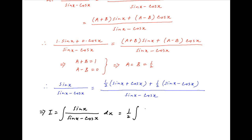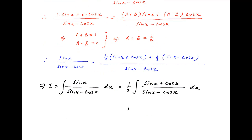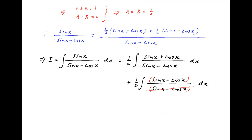Therefore the integral I can be broken into two components: the first component is one-half of the integral of (sinx plus cosx) upon (sinx minus cosx) dx, and the second component is one-half of the integral of (sinx minus cosx) divided by (sinx minus cosx) dx. In the second integral, sinx minus cosx cancels, so I equals x upon 2 plus one-half of the integral of (sinx plus cosx) divided by (sinx minus cosx) dx.